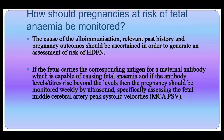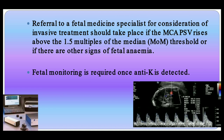For monitoring pregnancies at risk of fetal anemia, the cause of alloimmunization, relevant past history, and pregnancy outcome should be ascertained to generate a risk assessment for hemolytic disease of the fetus and newborn. If the fetus carries the corresponding antigen and antibody titer is beyond the threshold, the pregnancy should be monitored weekly by ultrasound specifically assessing the fetal middle cerebral artery peak systolic velocity (MCA PSV). Referral to a fetal medicine specialist for invasive treatment should take place if MCA PSV rises above 1.5 multiples of the median, or if there are other signs of fetal anemia. Fetal monitoring is also required once anti-K is detected.